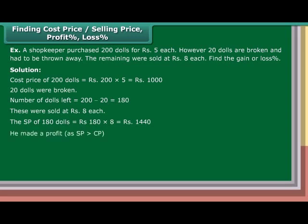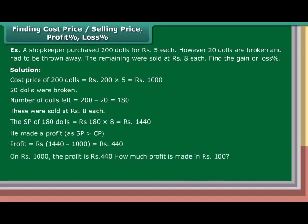He made a profit as SP is greater than CP. Profit equals Rs. 1,440 minus Rs. 1,000, which equals Rs. 440. On Rs. 1,000, the profit is Rs. 440. Profit percentage equals Rs. 440 upon Rs. 1,000 into Rs. 100, which equals 44%.